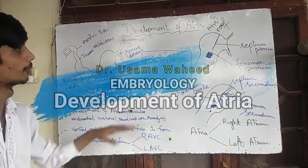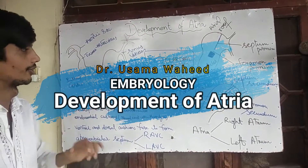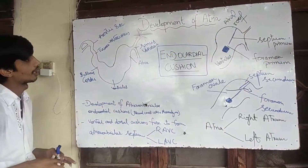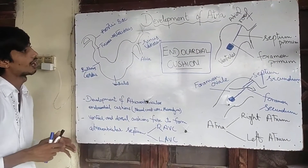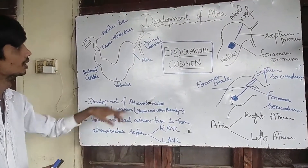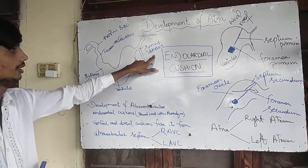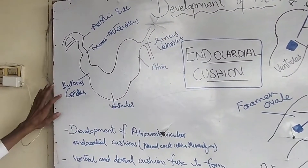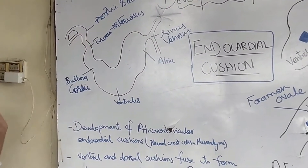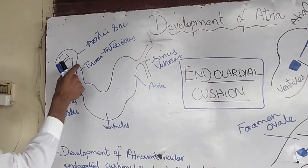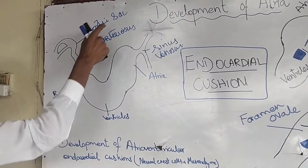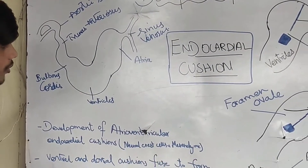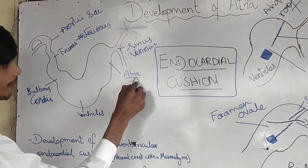We will now discuss the development of the atria. First, let's recall the five parts of the primitive heart tube starting from the venous end: the sinus venosus, the atria, the ventricles, the bulbus cordis, and the truncus arteriosus. The part from where the aorta arises is the aortic sac. Now we will begin discussing the development of the atria.